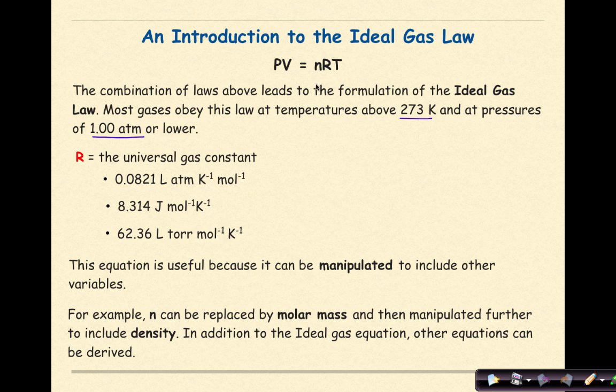Let's remind ourselves before we go on to the universal gas constant of what each of these represents. P represents pressure, V represents volume, N represents moles of gas, R is the universal gas constant which we'll talk about in a moment, and T is equal to temperature which will need to be in Kelvin.